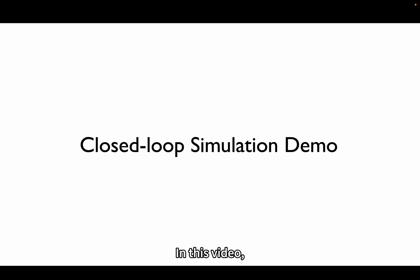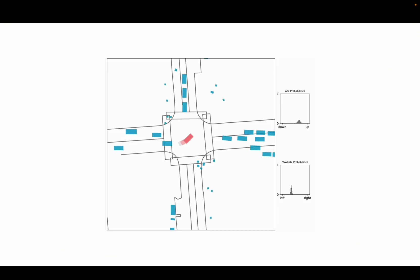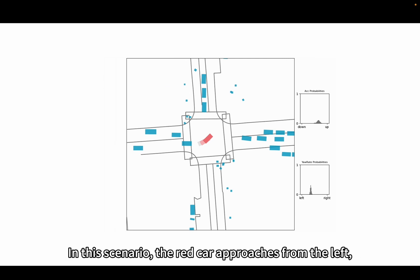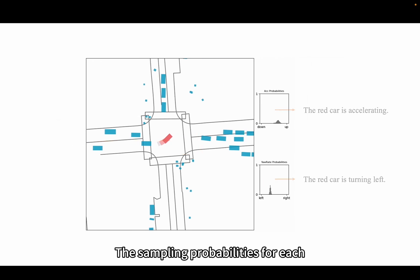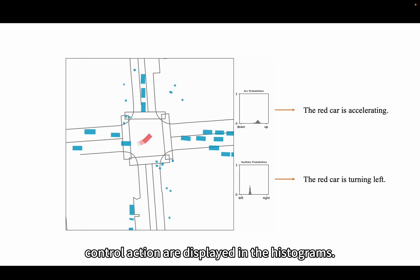In this video, we present the closed-loop simulation results of Keygrass on the Waymo Sim Agent test set. During the simulation, all agents are controlled by Keygrass, while the interest agent is marked in red. In this scenario, the red car approaches from the left, and we simulate its control actions at the intersection. The sampling probabilities for each control action are displayed in the histograms.